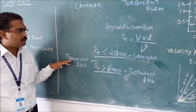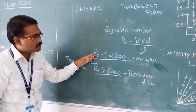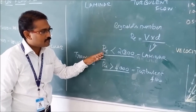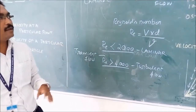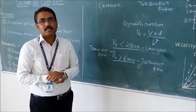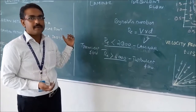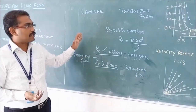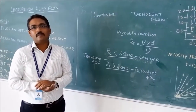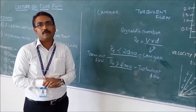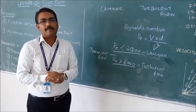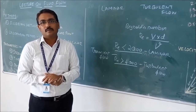Today we have understood what steady flow and unsteady flow are, the key parameters — streamline, timeline, path line, and streak line — and how to categorize laminar and turbulent flow using Reynolds number. A demonstration model has been developed to visually show what laminar and turbulent flow look like. Thank you.